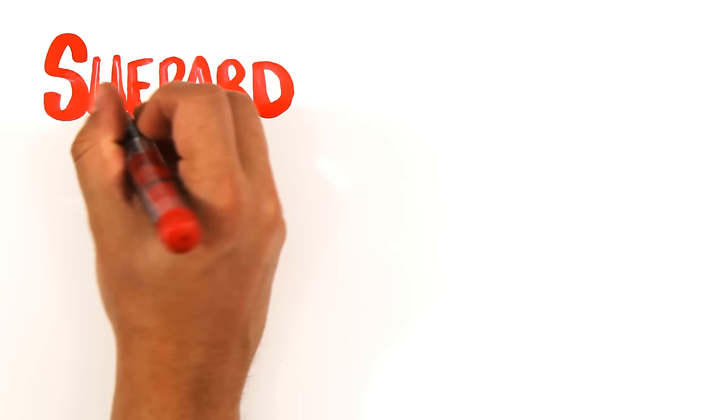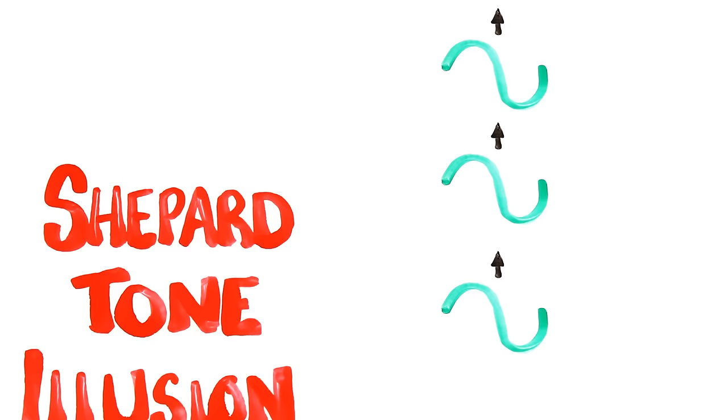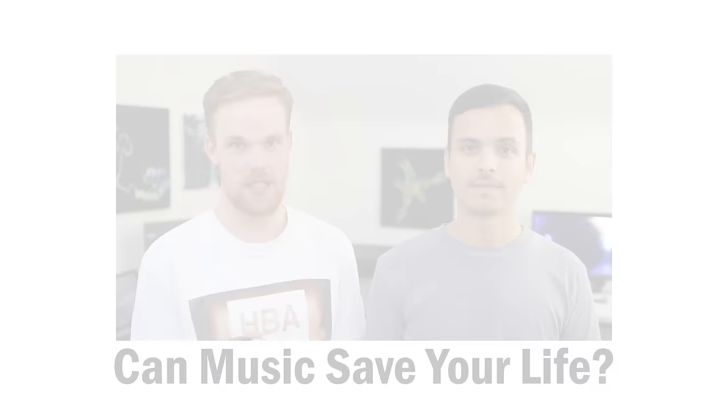It's called the shepherd tone illusion, of which there are many variations. In it, multiple sine waves are played on top of one another, raising in pitch, while one quickly drops down an octave as the others continue rising. But our brain doesn't notice this drop, and so the clips sound like they're rising forever.